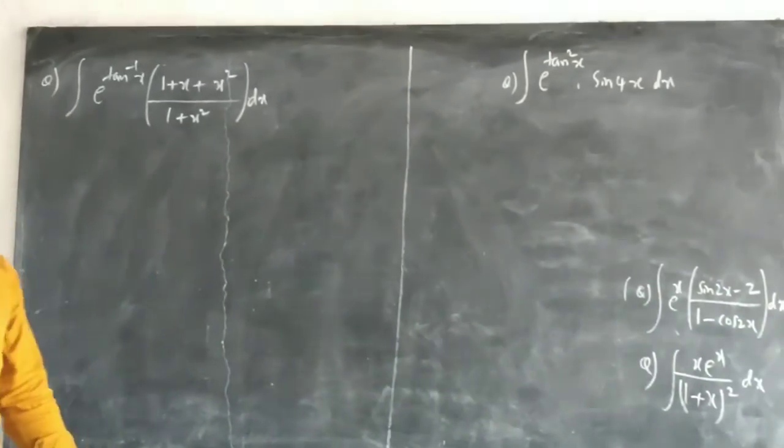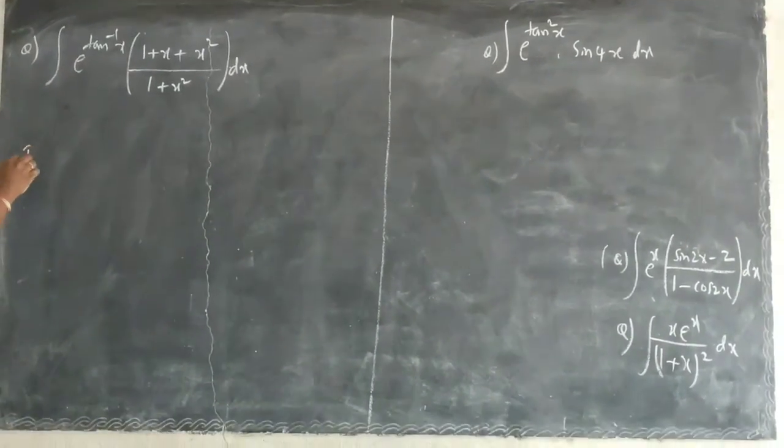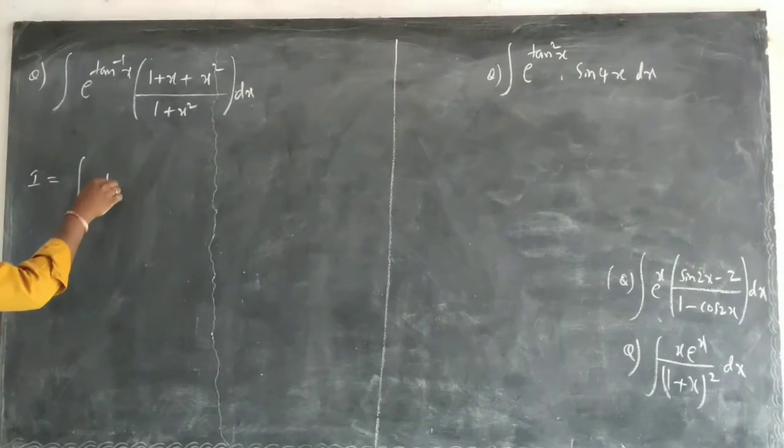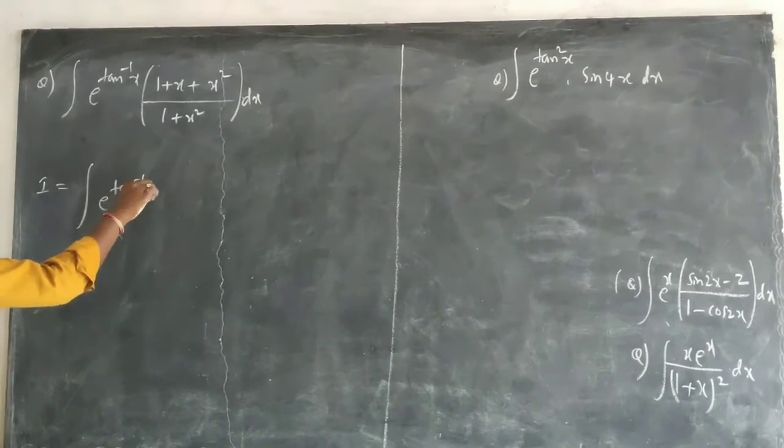First of all, let us solve this question. Let us see here this question. I is equal to, you can write this one here, integration of e^(tan^(-1)x) dx.